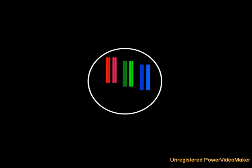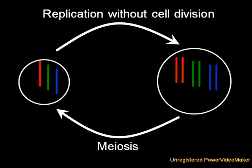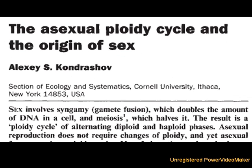Meiosis most likely evolved first. Why? There are two leading hypotheses. The first postulates that it was a mechanism to correct for errors when the DNA replicated but the cell didn't divide, while the other proposes that under some environmental conditions, organisms would prefer to be haploid, while at other times they would benefit from being diploid. These are called ploidy cycles. To go from haploid to diploid only involves DNA replication without cell division, but to go back requires something similar to meiosis.